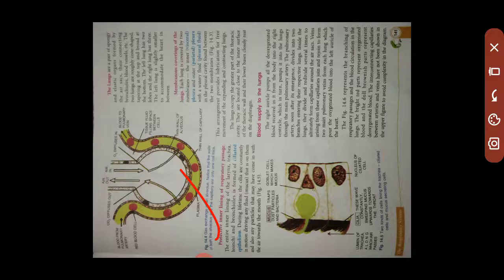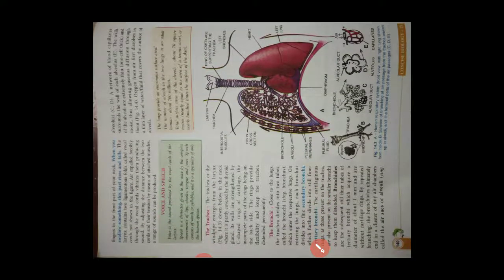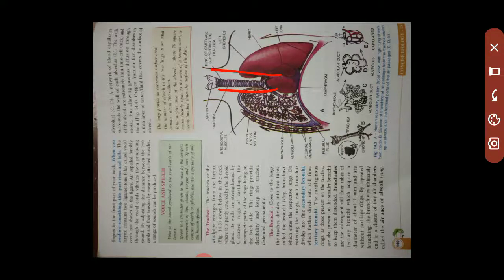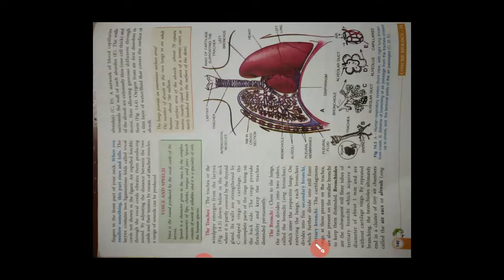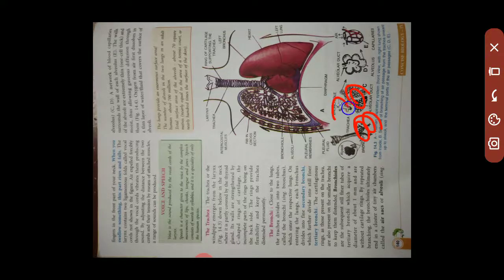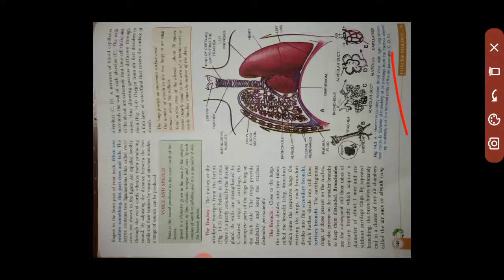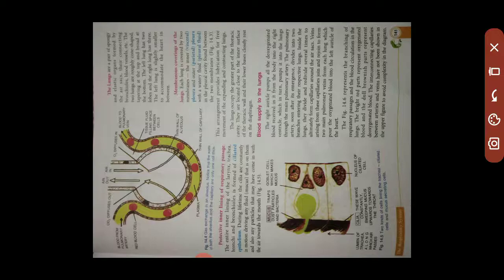Now, regarding the protective inner lining of the respiratory passage — the trachea is covered with rings of cartilage for support. Similar cartilaginous rings are also found in the bronchi, keeping them open and distant. You can see this mentioned here: cartilaginous rings are also present in the major bronchi.